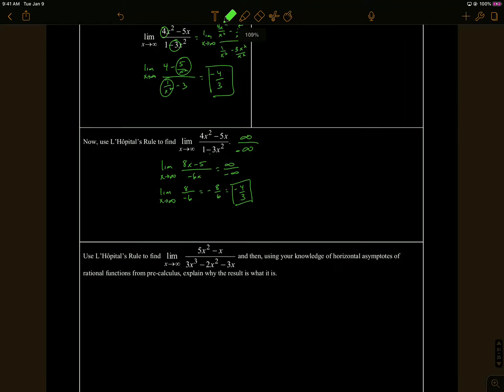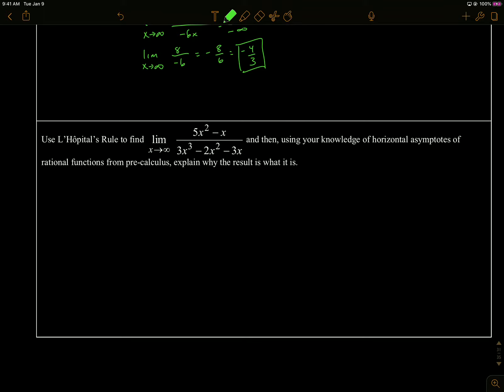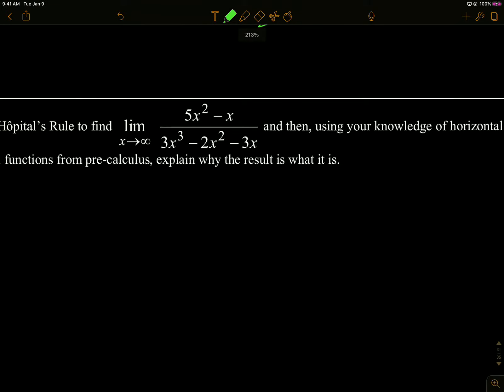All right, so again we can use L'Hôpital's on this. It's the same idea. I know that because of horizontal asymptotes, when the degree on top is smaller, the limit is going to be zero. Again, this is for, we know we want to do horizontal asymptotes when it's infinity or negative infinity, so this answer is going to be zero.